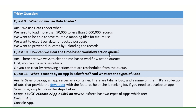Question ten: how can we clear the time-based workflow action queue? This question is also very popular. There are two ways: first, you can make the criteria evaluate to false — if the criteria was positive, use a negative condition to break it. Or you can simply remove the action to reschedule or remove it from the queue. I will explain this with a demo in the next scenario-based questions.